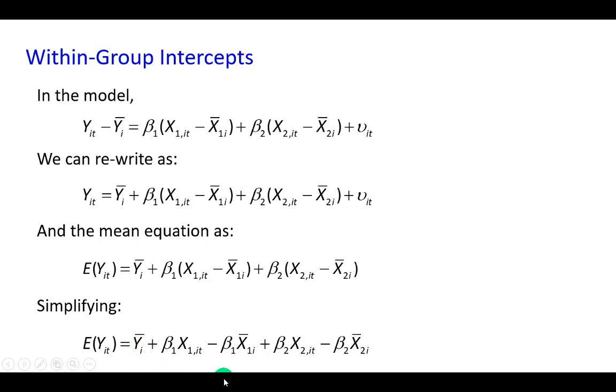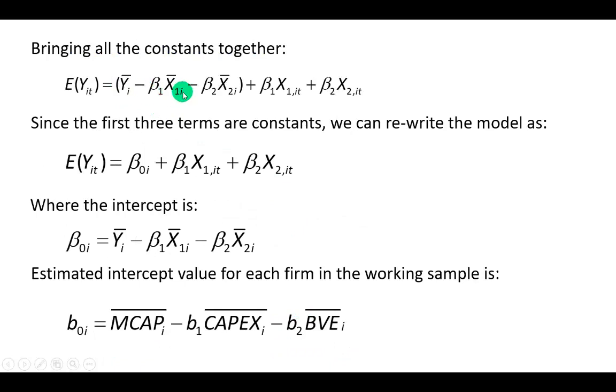The mean of y, this coefficient multiplied by the mean of x1, and this coefficient multiplied by the mean of x2 for this three-variable model. So bringing all the constants together, as you can see right here, we do have our intercept. So we know that our intercept is this expression right here.